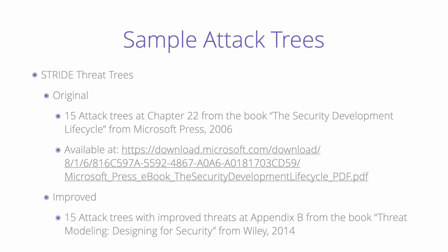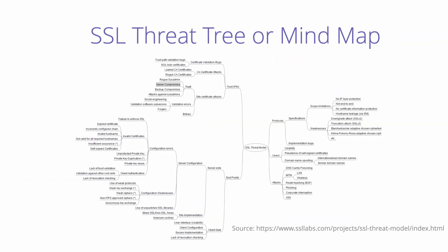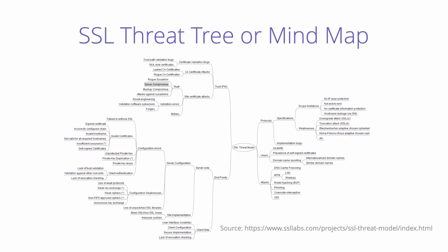The original version of the STRIDE threat trees is from the book titled 'The Security Development Life Cycle,' published in 2006, downloadable from the Microsoft website. A slightly improved and more up-to-date version is available in the book 'Threat Modeling: Designing for Security' by Adam Shostack, published in 2014. Another example of threat trees is the work done by Ivan Ristic in 2010, where attack trees are represented as mind maps, though they can also be pictured as trees.